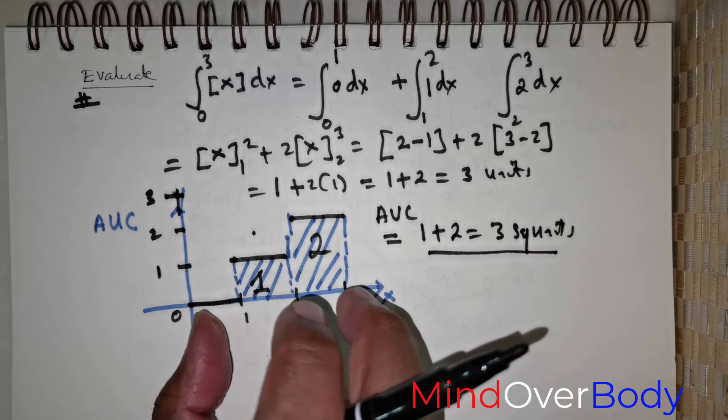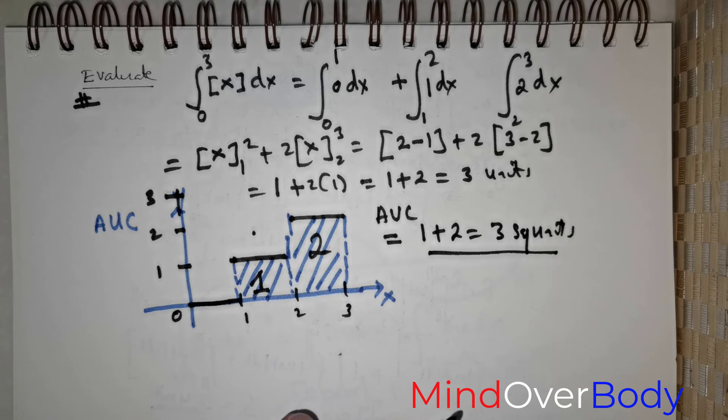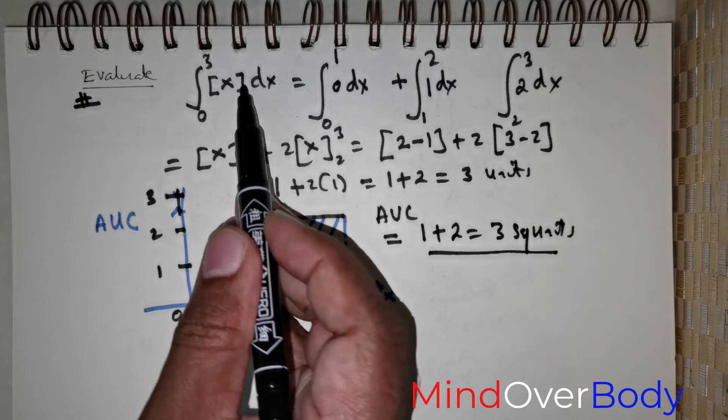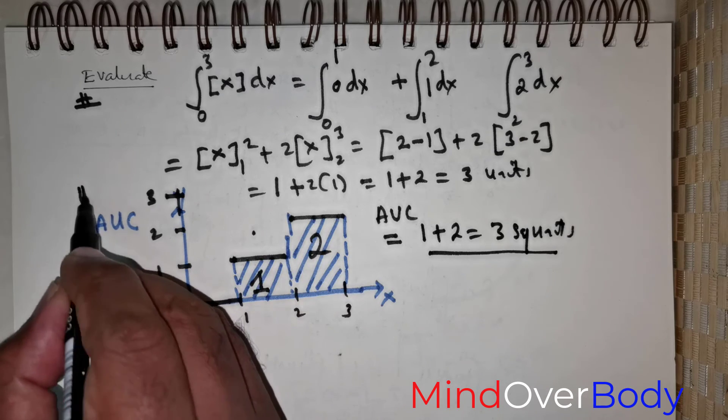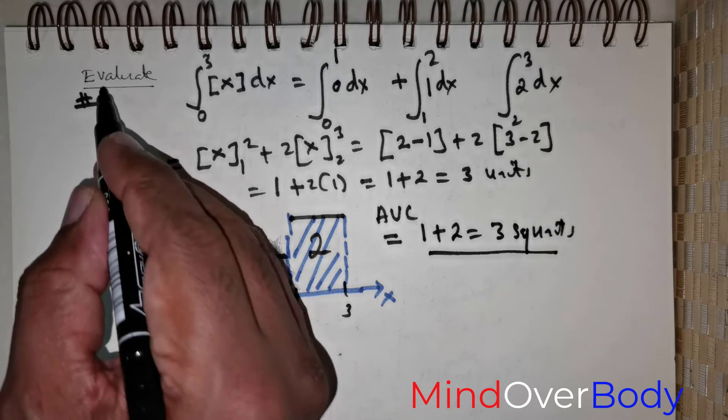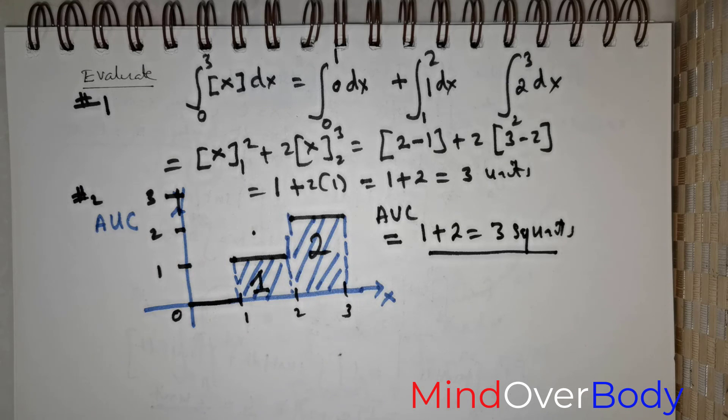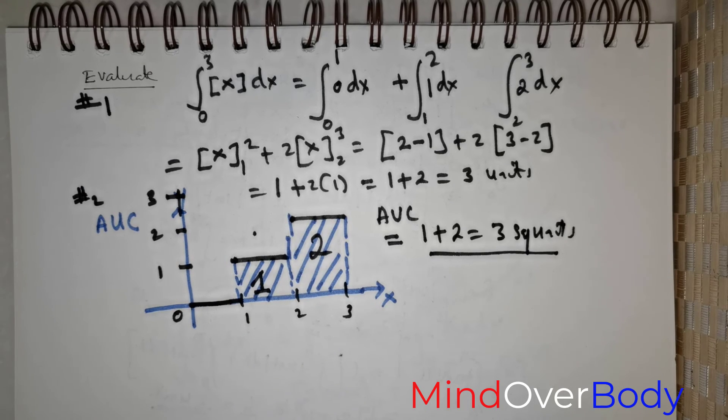Which is obtained merely by drawing the graph for the greatest integer function. So, this is another way. And maybe, probably I can represent this as 1 and 2. So, let's move on to the next question, students.